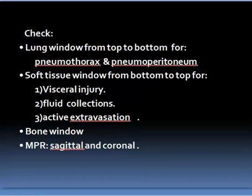We check the lung window for air from top to bottom for pneumothorax and pneumoperitoneum, then we check the soft tissue window from bottom to top for any vessel injuries, fluid collections, and active extravasation. Then we check the bone window, and multi-planar reconstructions in sagittal and coronal are then requested.